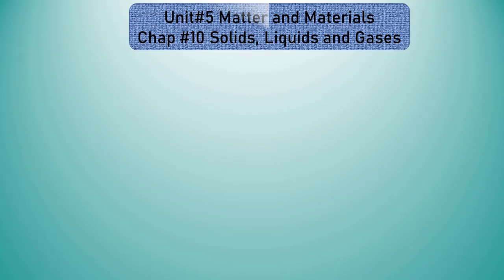This is unit 5: Matter and Materials, chapter number 10: Solids, Liquids and Gases. These are the three states of material which we have discussed in the previous lesson. Before starting today's lesson, let's take a very short review about this chapter. First of all, see the solids.